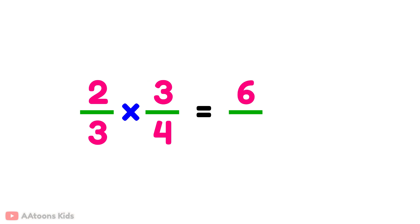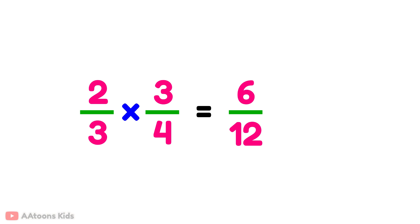Second step, multiply the denominators: 3 multiplied by 4 equals 12. So the fraction is 6 over 12.